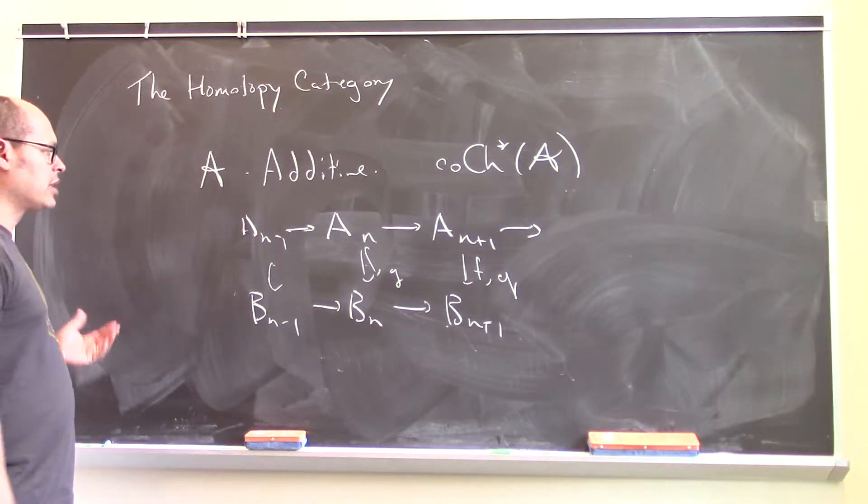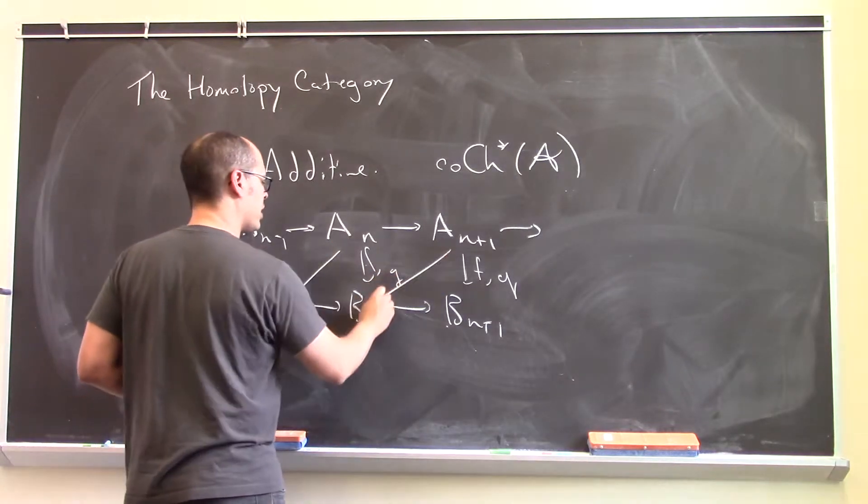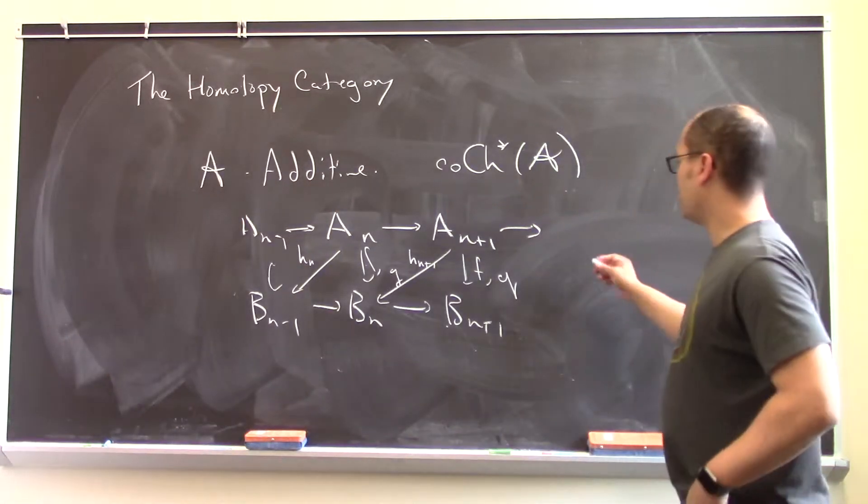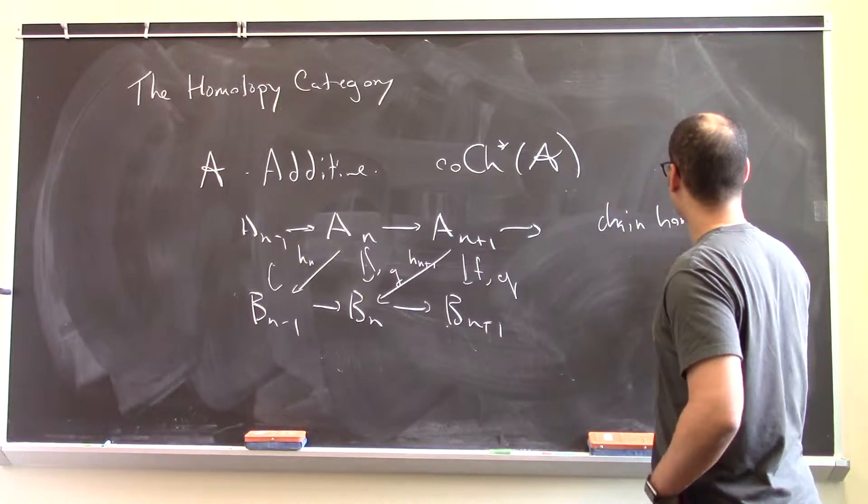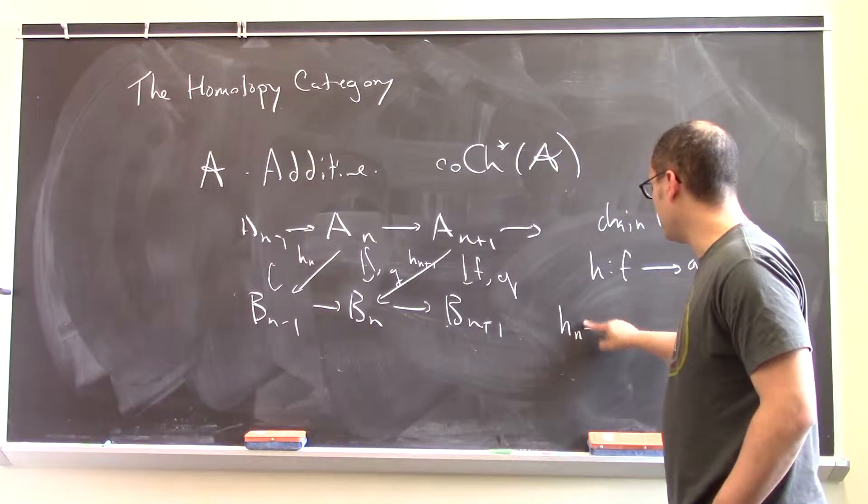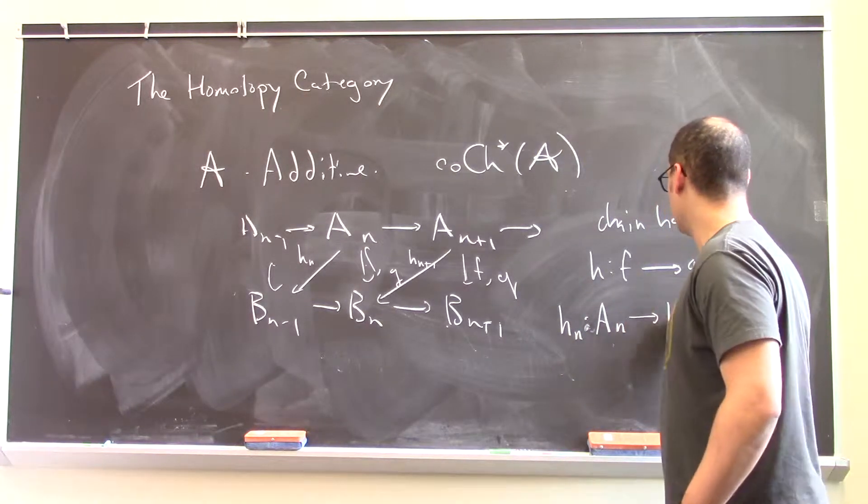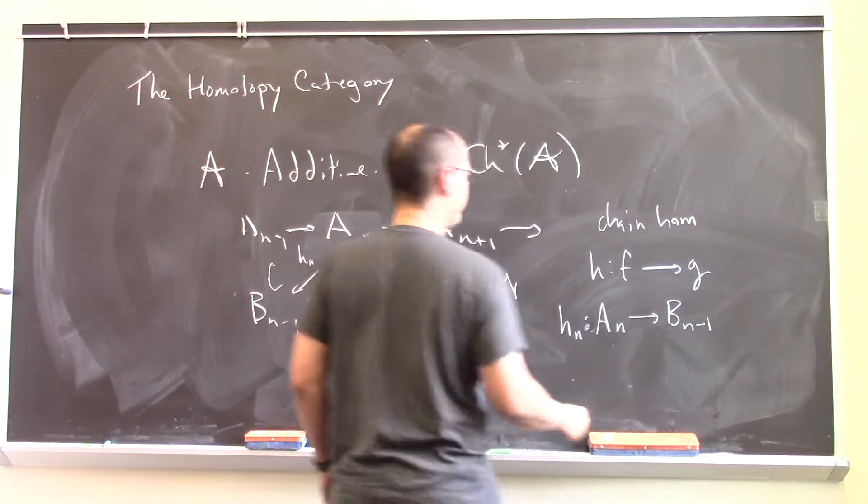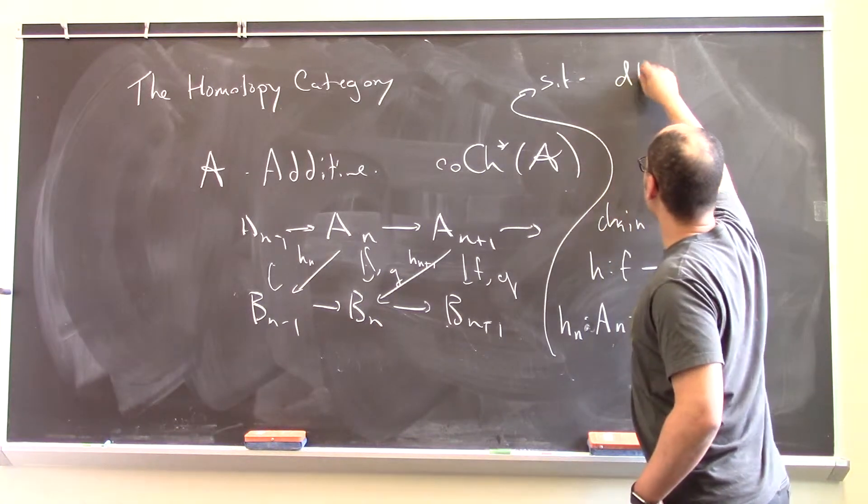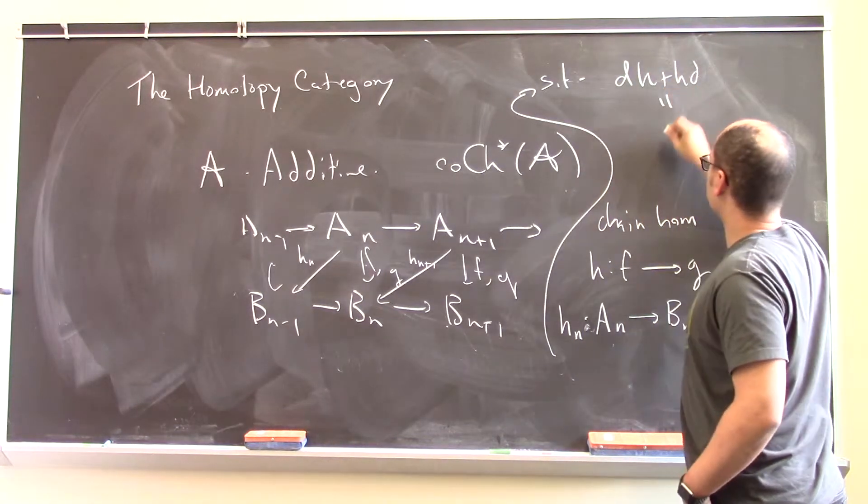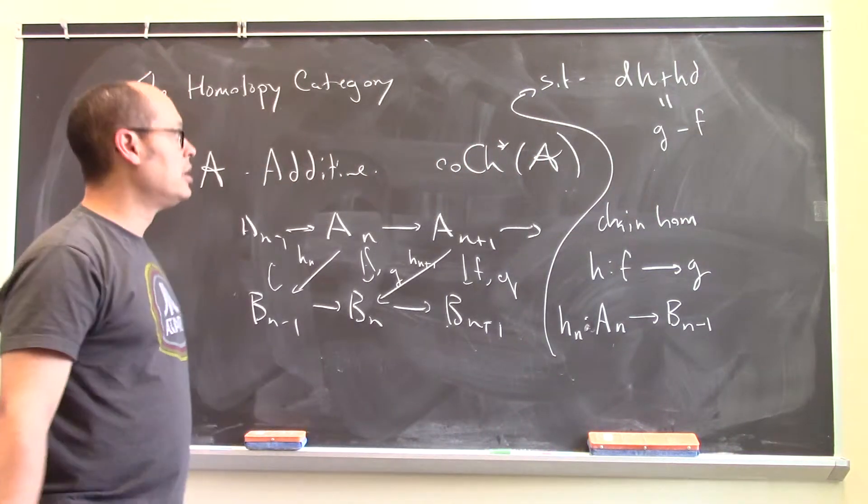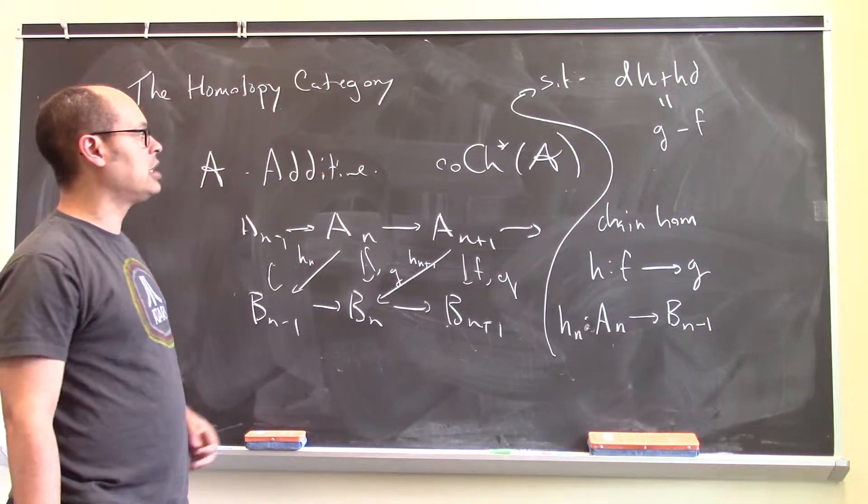Then I can describe this thing called a homotopy, and that is simply a collection of maps that go like this. So, we'll call them, like this would be h_n, h_{n+1}, etc. That is to say, a chain homotopy h from f to g is given by a collection of maps h_n from A^n to B^{n-1}, such that if you look at dh + hd, then that's equal to g minus f. So, to say that two maps are chain homotopic means that I can find an h such that dh + hd is the difference of the two maps.